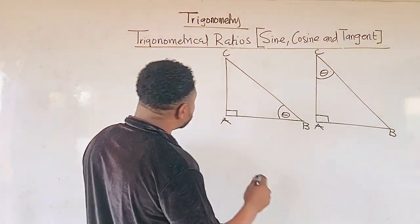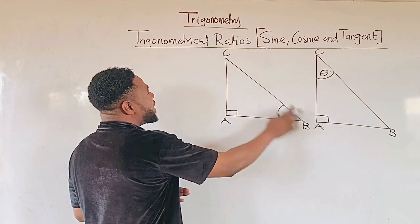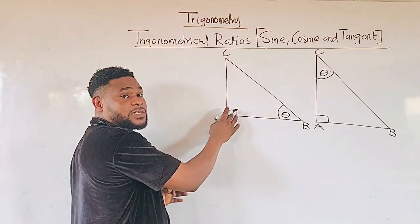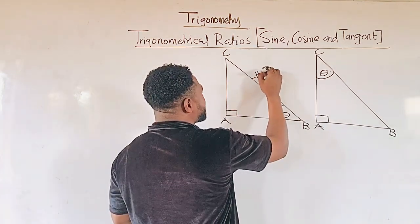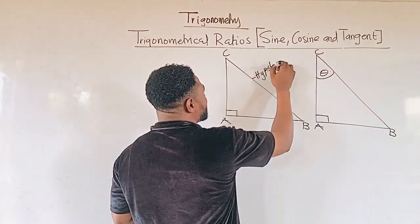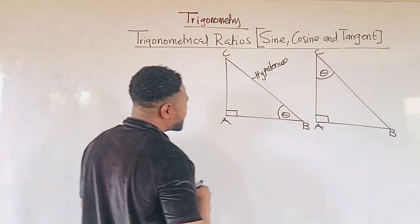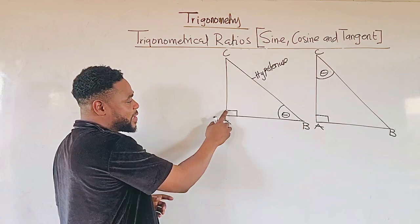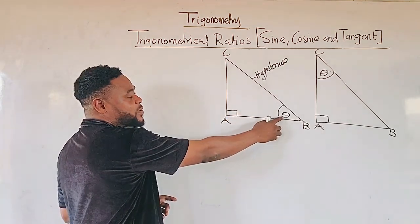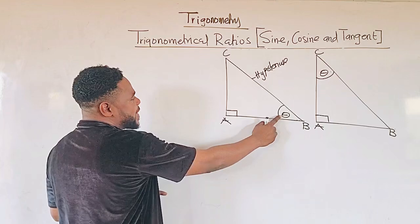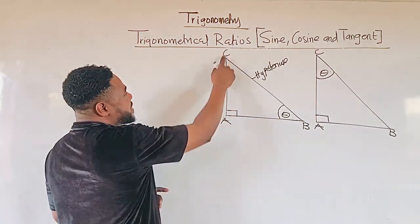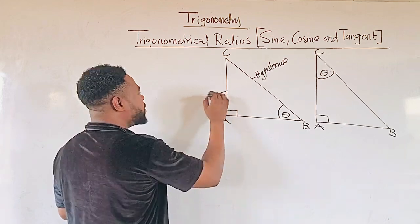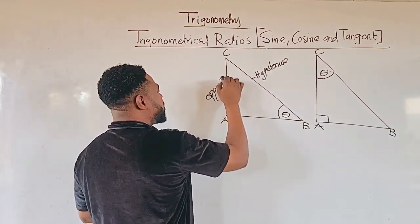First of all, let us look at this. We can see line BC. Line BC is facing this 90 degrees symbol, and we call it hypotenuse. Now let us focus on this angle. We move from the right angle and we are focusing on this theta now. This theta here — we have line AC, which is facing this theta, and we call the line opposite.